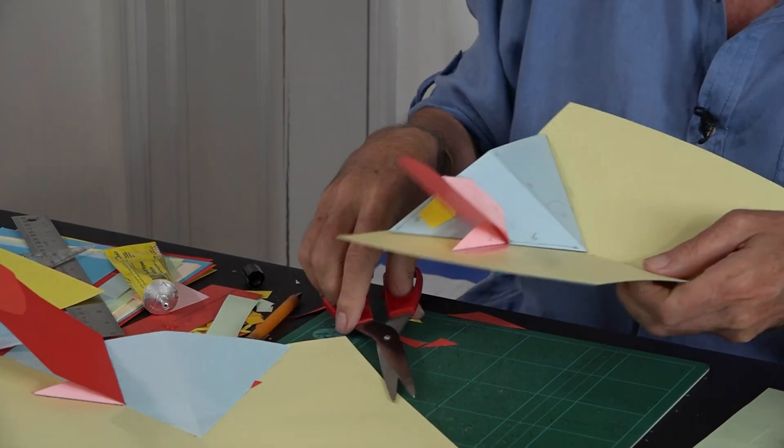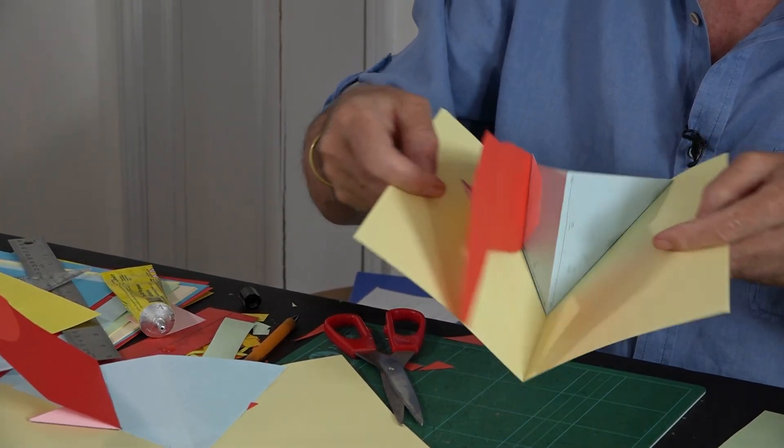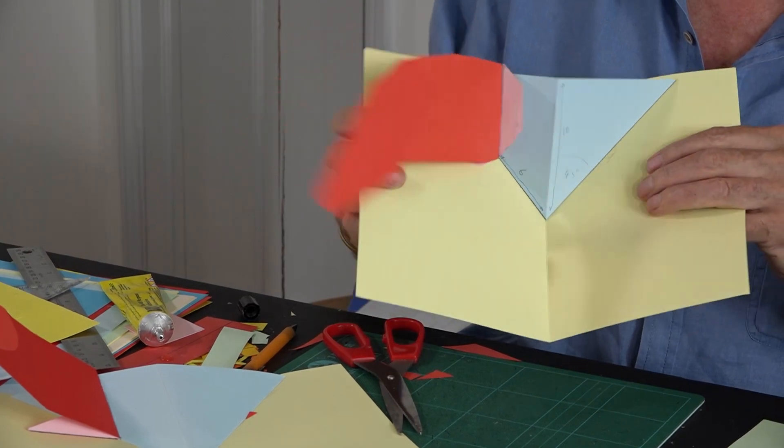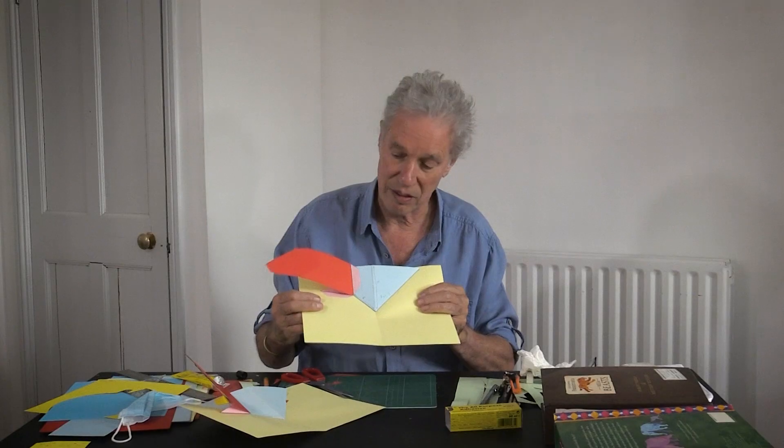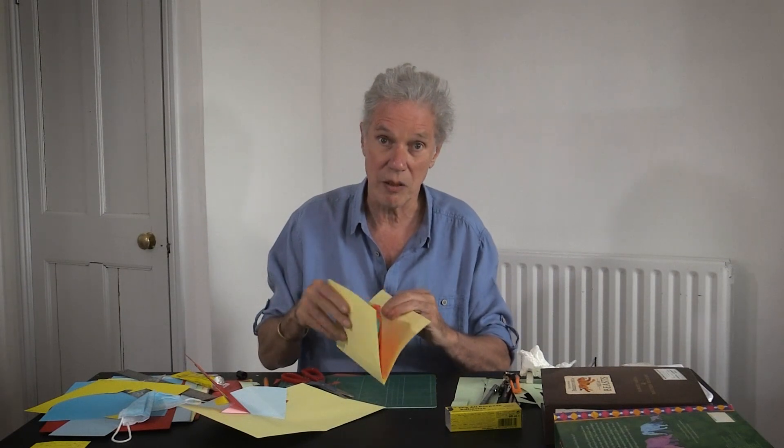Here it is opening and closing, and you've got quite a nice action on that. So that's the strut with two hubs unfurling a wing.